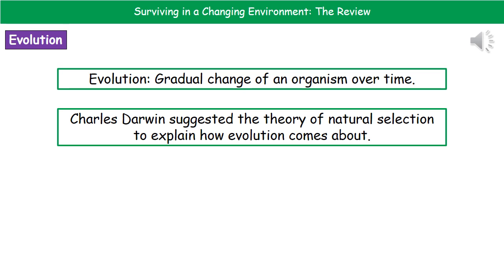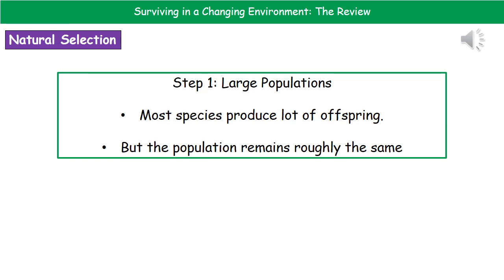We've got one famous scientist that hopefully we've all heard about before: Charles Darwin. Charles Darwin suggested the theory of natural selection to explain how evolution comes about. If we think about this process of natural selection, we can break it down into four key steps.